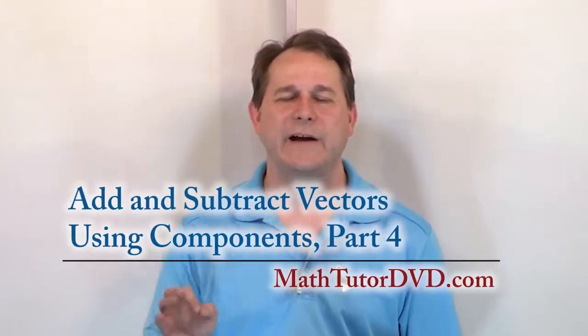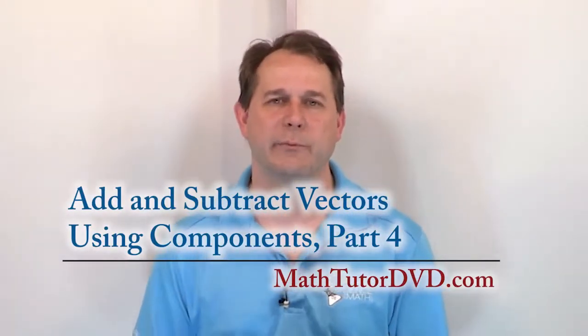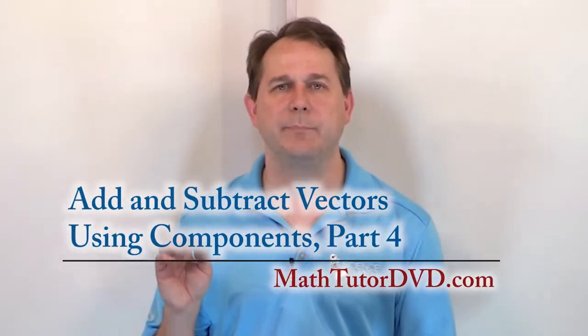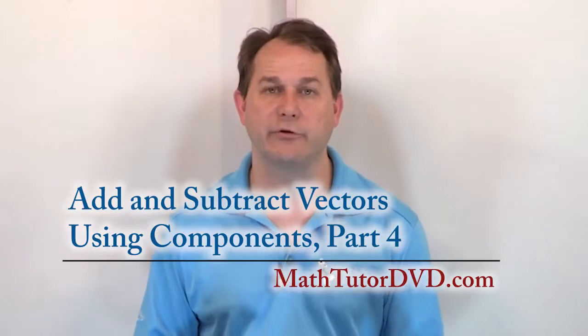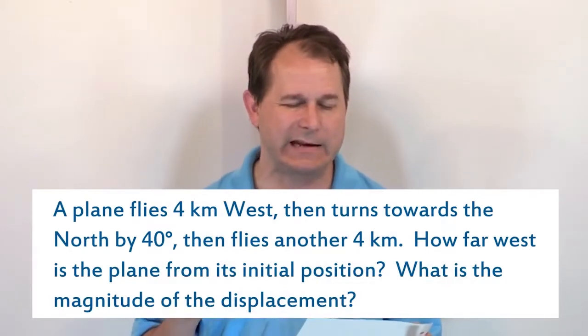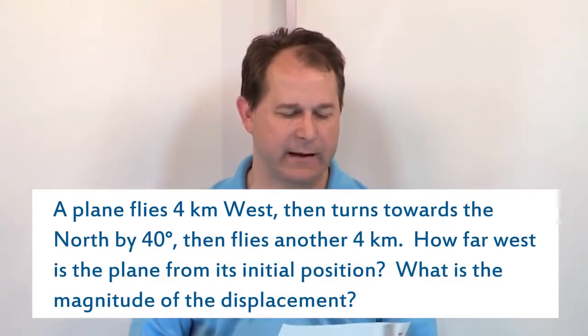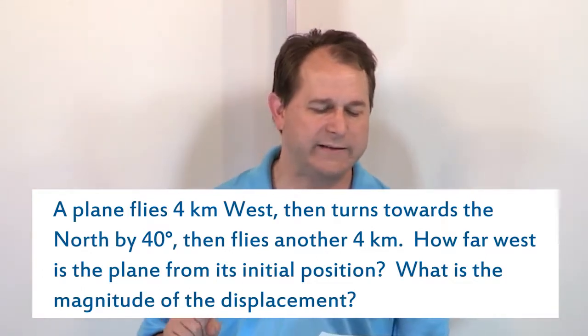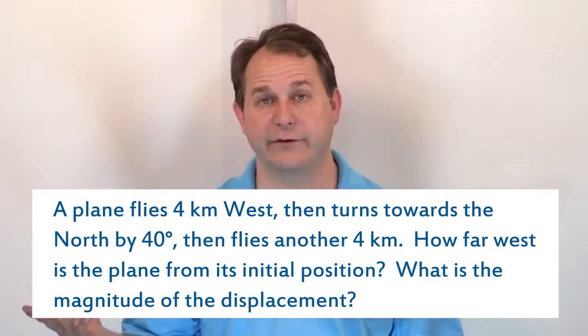Hello, welcome back to adding vectors using components. We have one more problem here in this type of problem, and it goes like this. A plane flies four kilometers west, and then it turns towards the north by 40 degrees, and then it flies for another four kilometers. How far west is the plane from its initial position? What is the magnitude of the final displacement?